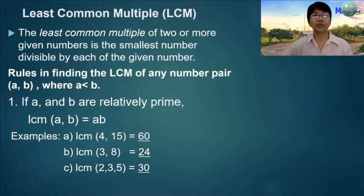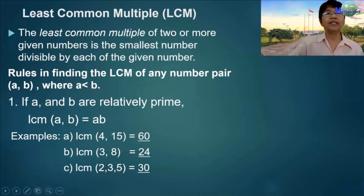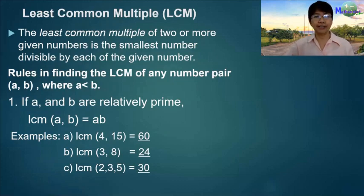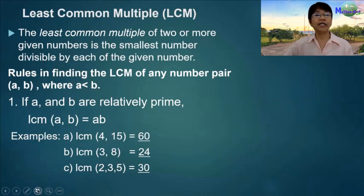Now let us move on to the Least Common Multiple, or LCM. The least common multiple of two or more given numbers is the smallest number divisible by each of the given numbers. Rule 1: if A and B are relatively prime, then the LCM of A and B is the product A times B.